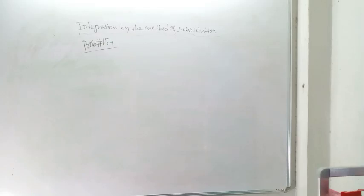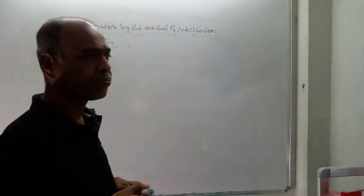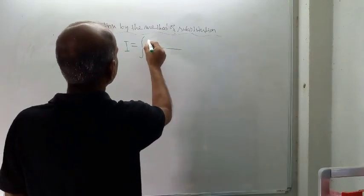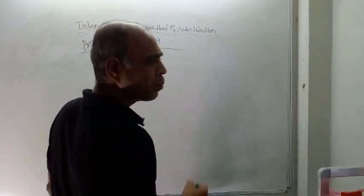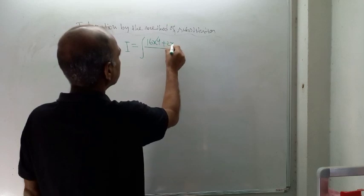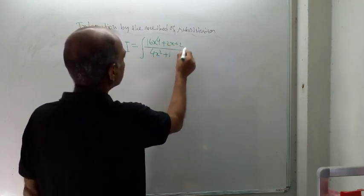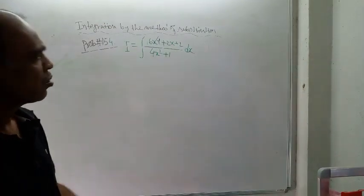Good morning. This is the solution of problem number 154 from the chapter on integration by the method of substitution. The problem is: Integration I is equal to (16x⁴ + 2x + 2) divided by (4x² + 1) dx. So this is the given problem.